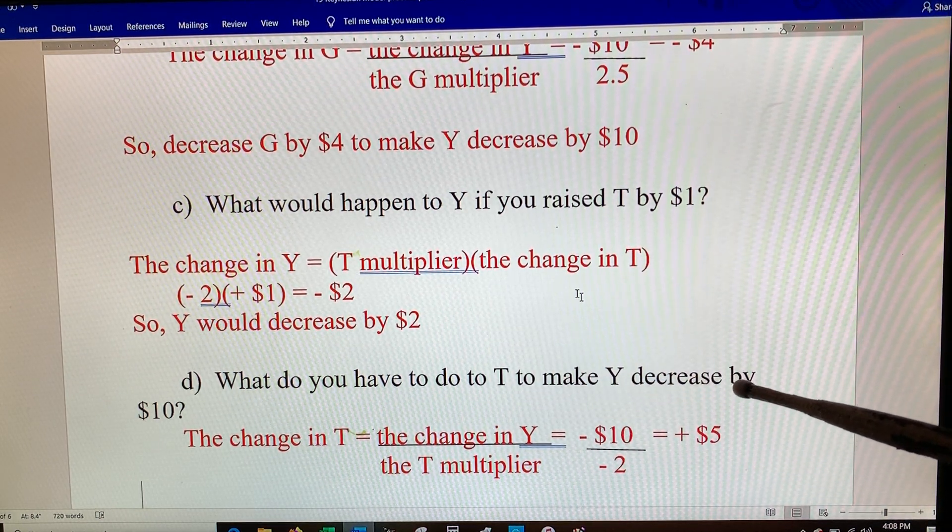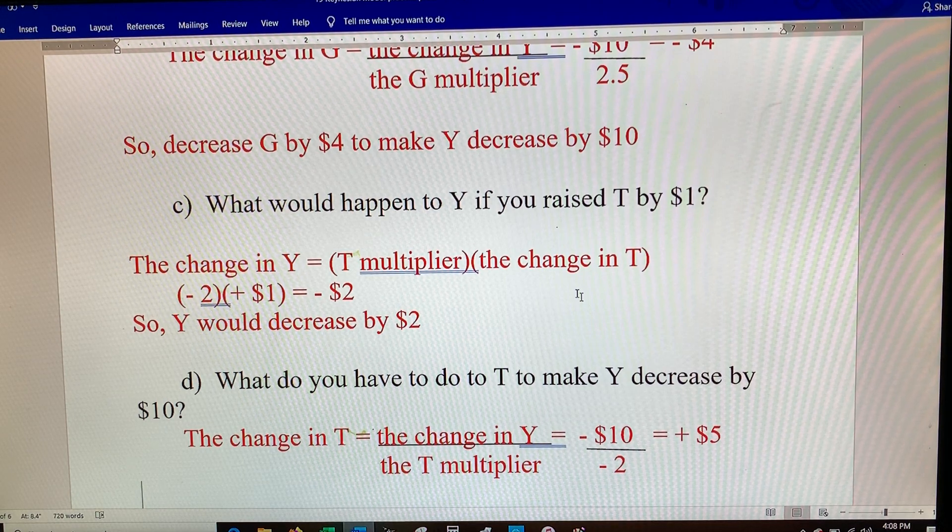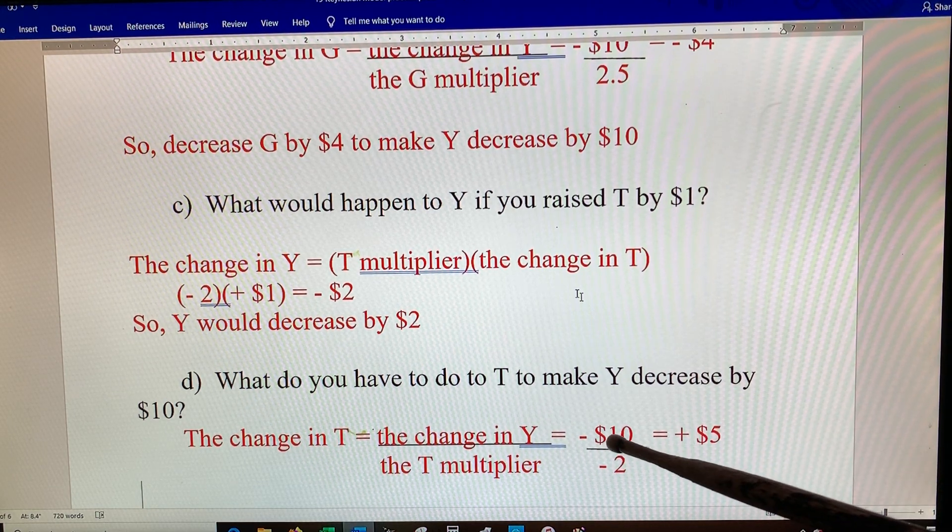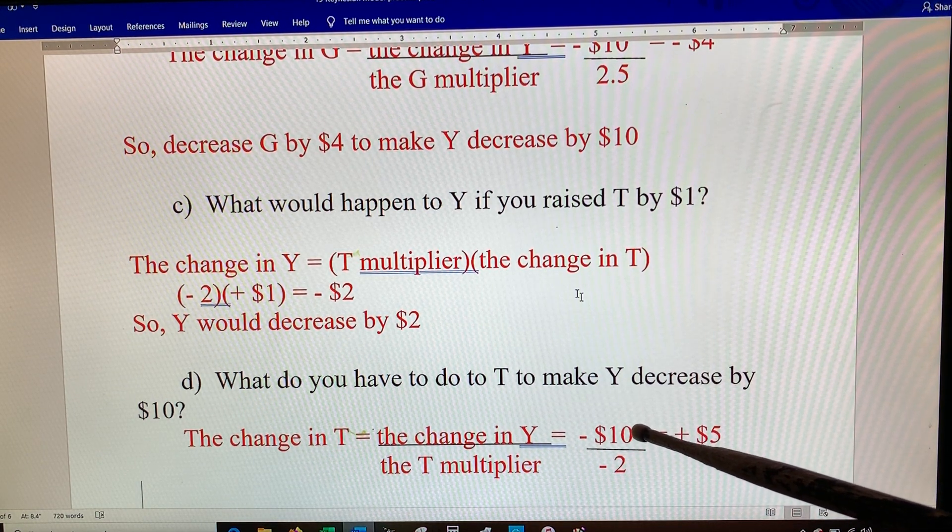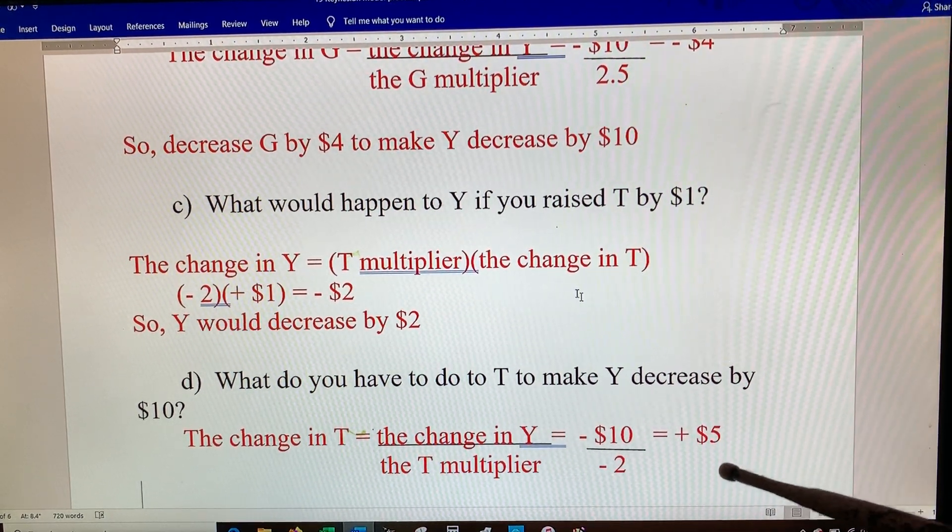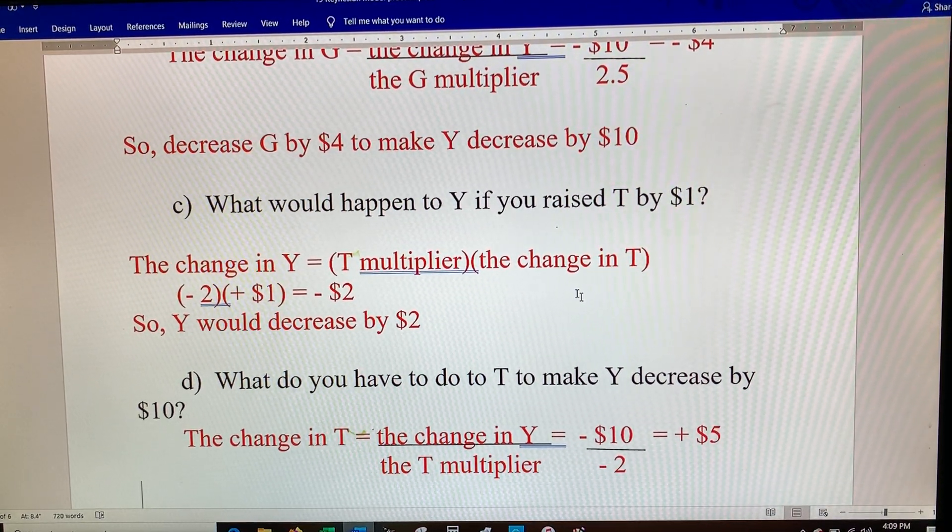What do you have to do to taxes to make Y drop ten dollars? So your desired change in GDP would be a negative ten divided by the multiplier. You'd raise taxes by five dollars, plus five.